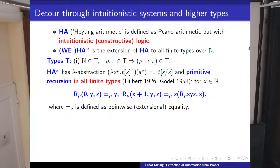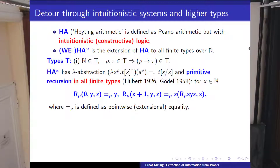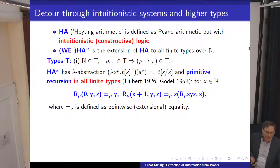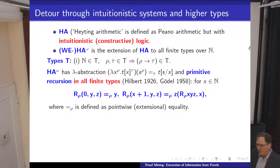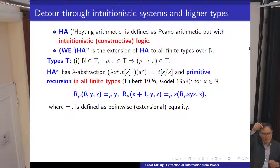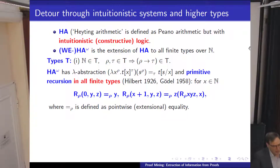If we climb up with the types, we get more and more functions, and this has a quadratic correspondence to the Grzegorczyk hierarchy, as discussed by Andreas Weiermann. If you go up to type level n, then you can find exactly the same functions which are alpha less than omega_n, because omega_n is a tower of omegas of height n+1.